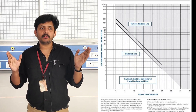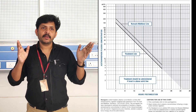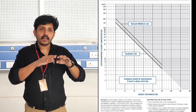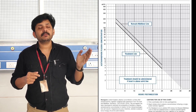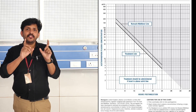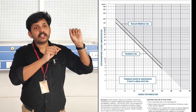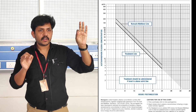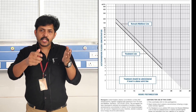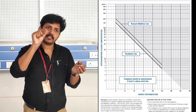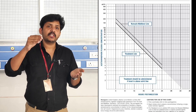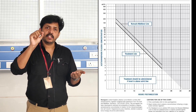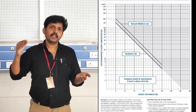There is a graph called the Rumack-Matthew nomogram. On the x-axis you have the time after consumption of Paracetamol, and along the y-axis you have the plasma Paracetamol levels. The graph starts at 4 hours and extends till 24 hours. You take the blood Paracetamol levels and plot them on this Rumack-Matthew nomogram. If the blood Paracetamol level is above this line, you give the antidote — N-acetylcysteine. If values are below the line, do not start N-acetylcysteine.